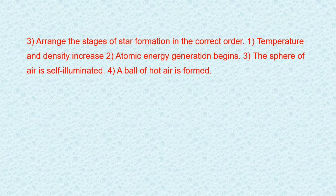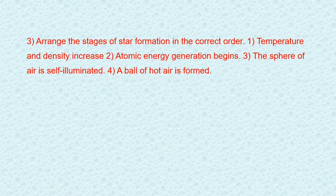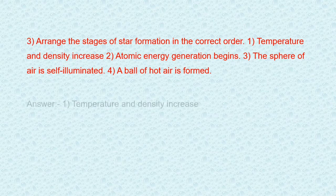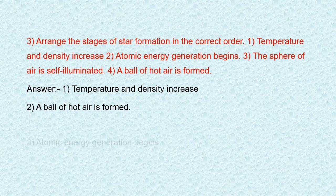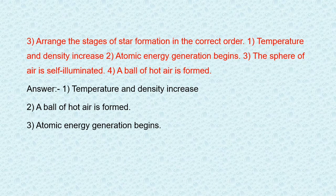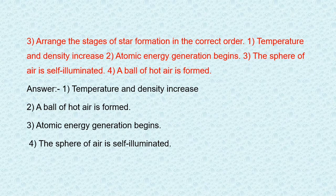Question number three: arrange the stages of star formation in the correct order. The stages are: temperature and density increases, atomic energy generation begins, the sphere of gas is self-illuminated, and a ball of hot gas is formed. The correct order is: first, a ball of hot gas is formed; second, temperature and density increases; third, atomic energy generation begins; and fourth, the sphere of gas is self-illuminated.